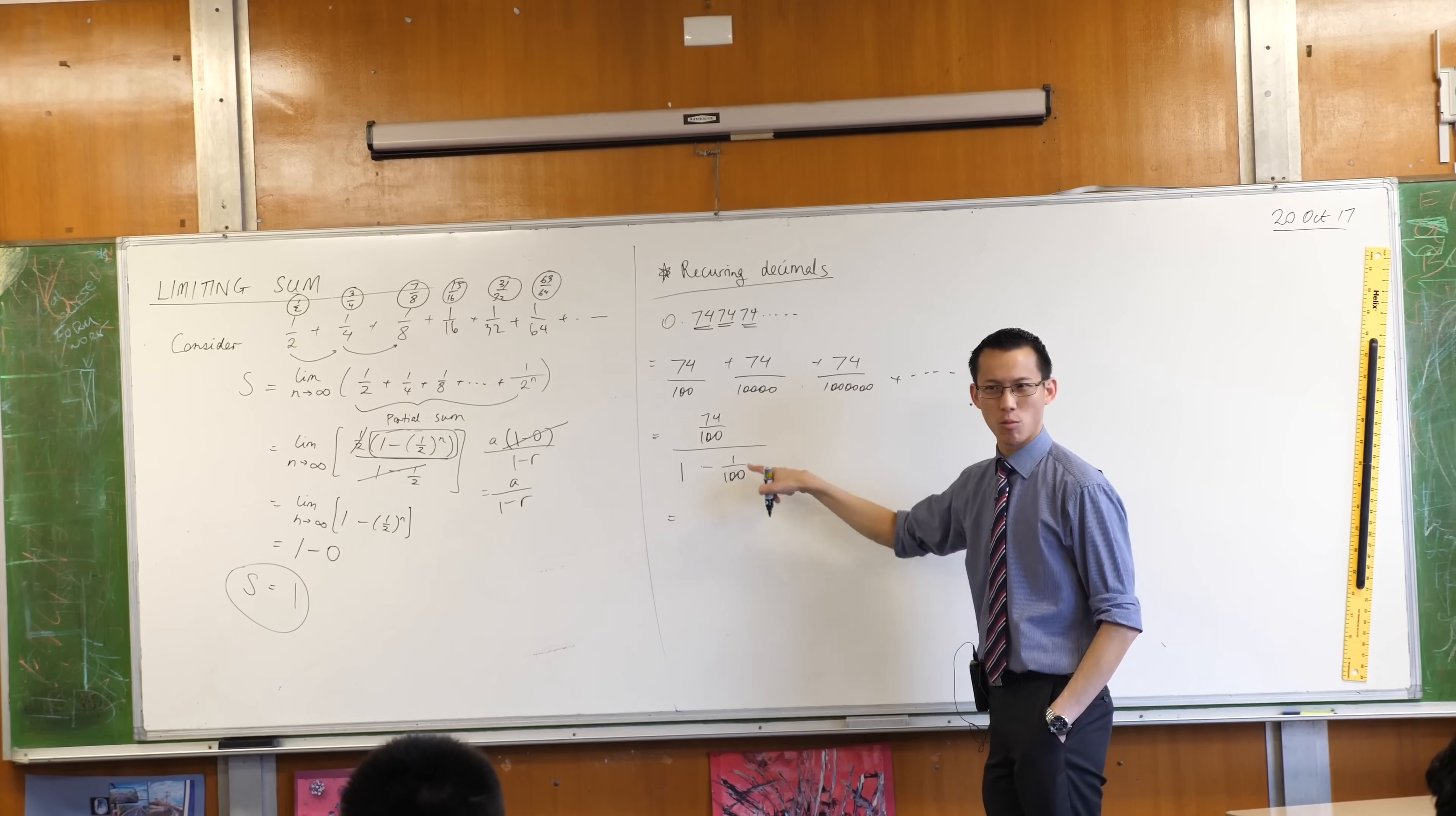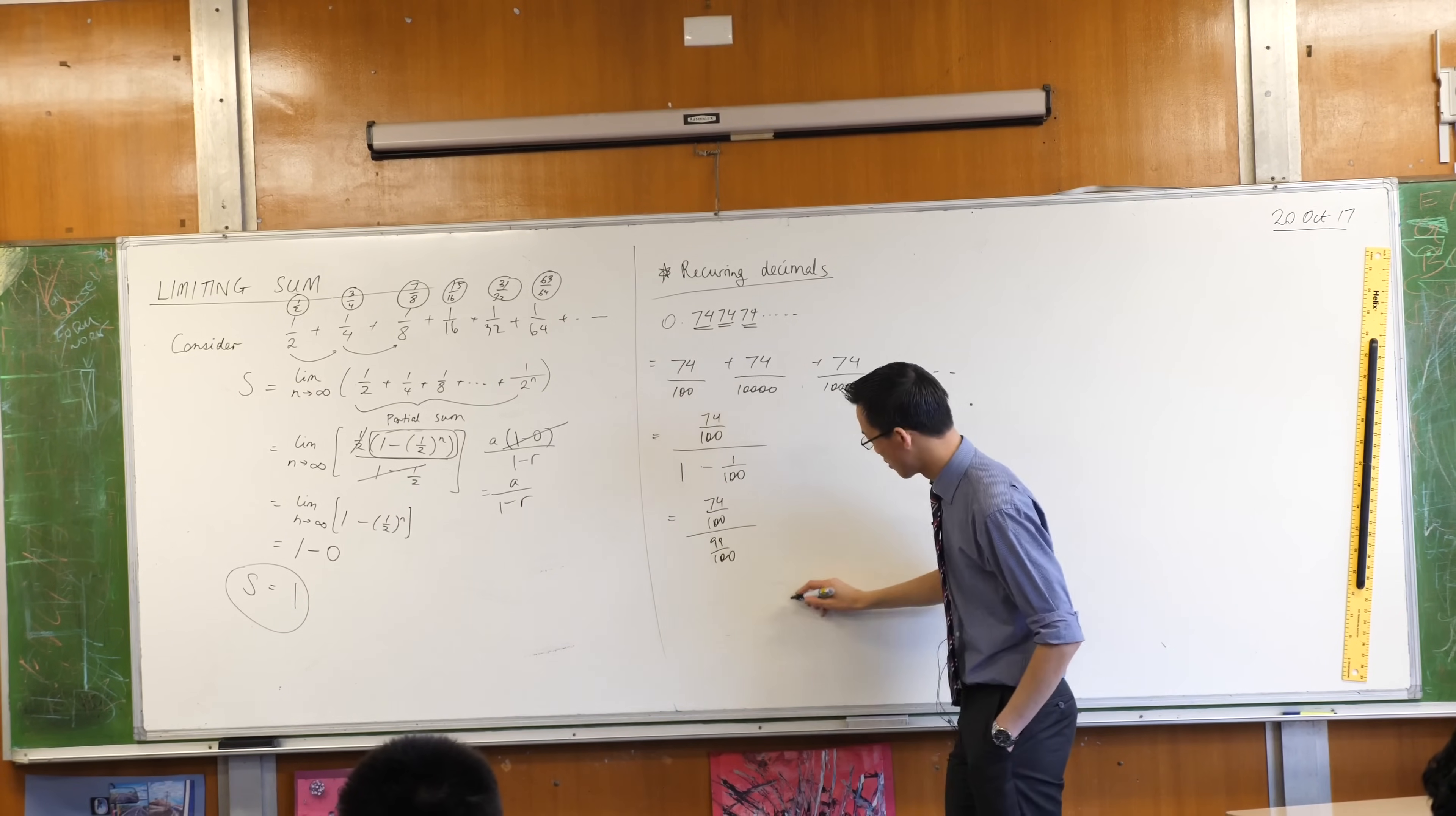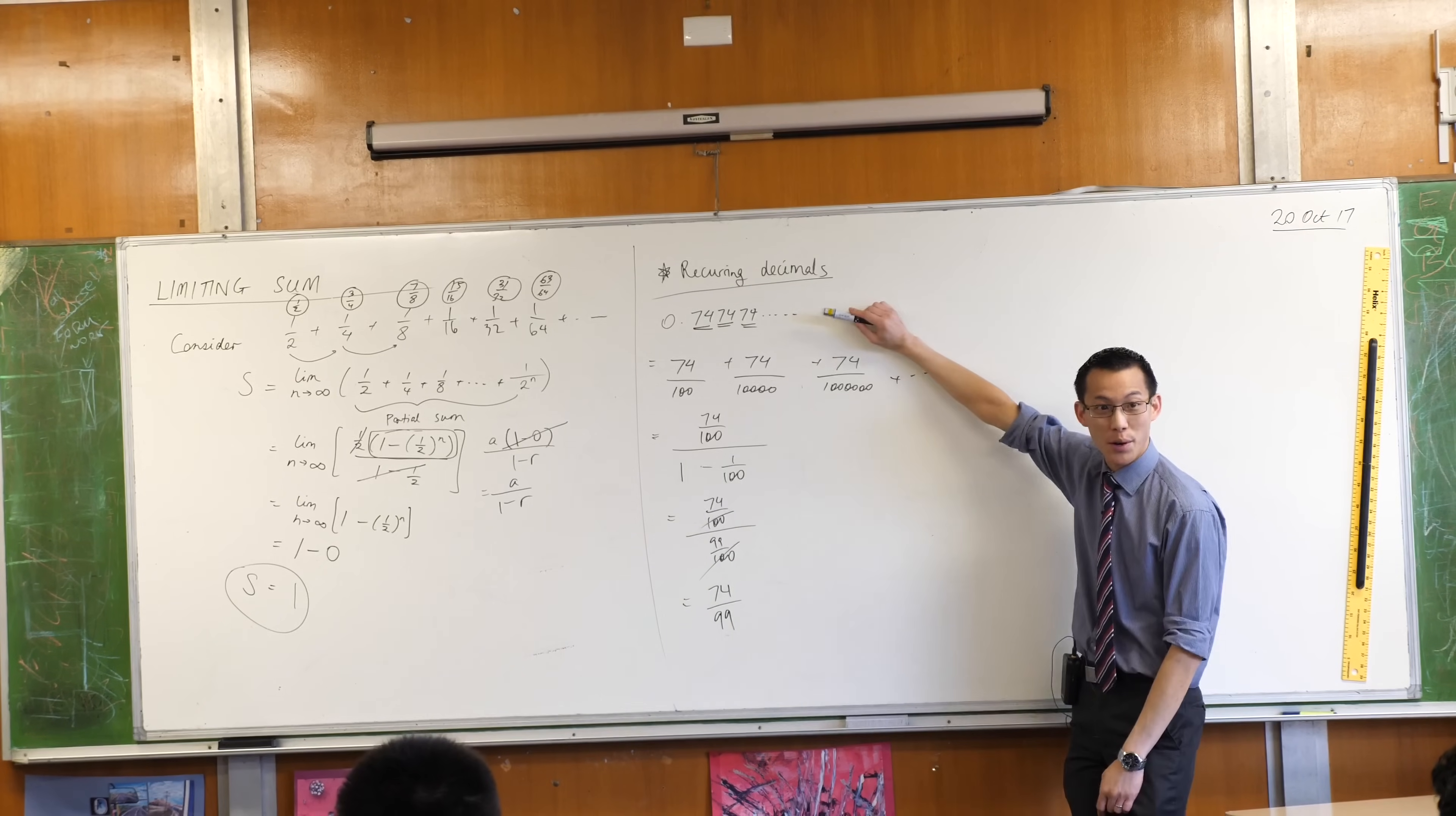That looks a bit gross. You can do something with that, right? 1 minus a hundredth? That's going to be how many hundredths? That'll be 99 hundredths. But look. I've got hundreds here. I've got hundreds here. So just like you learned four years ago, 74 or 99 is the fraction that gives you this recurring decimal.